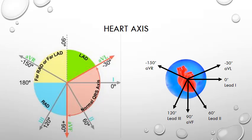And here is the hex axial diagram showing the areas for normal axis, which is between minus 30 degrees and plus 90 degrees. If the axis is between minus 30 and minus 90 degrees, it is known as left axis deviation, and if it is between plus 90 to plus 180 degrees, it is right axis deviation.